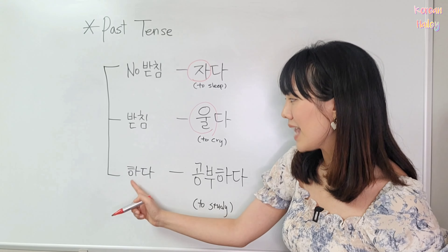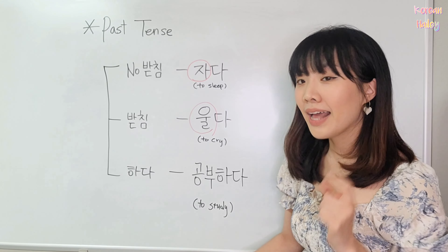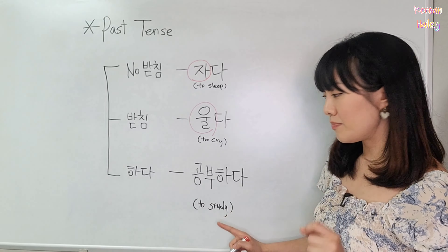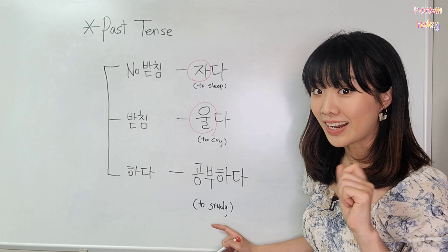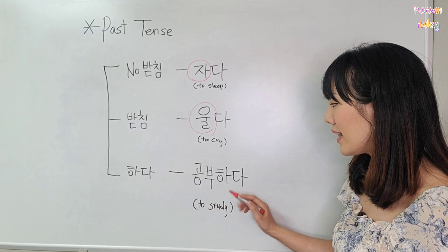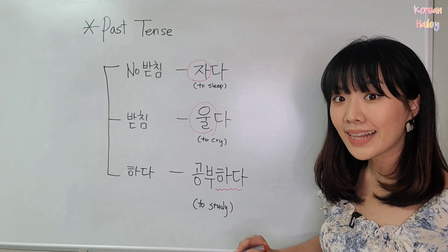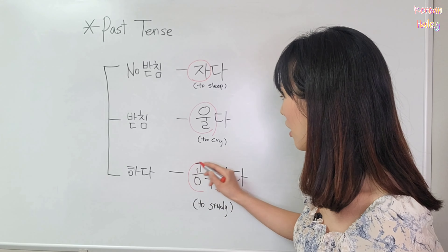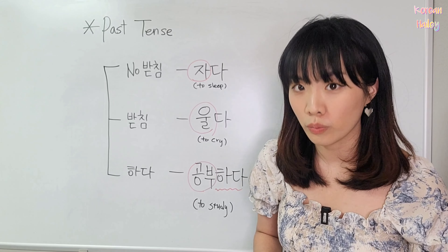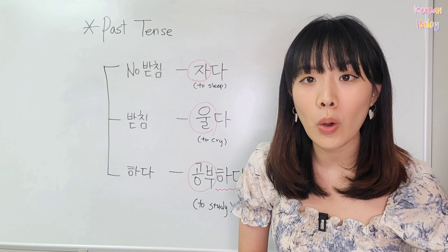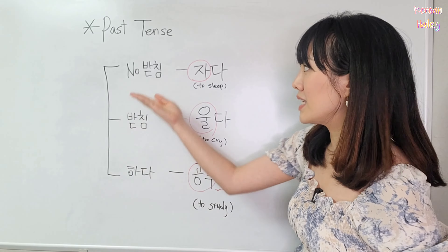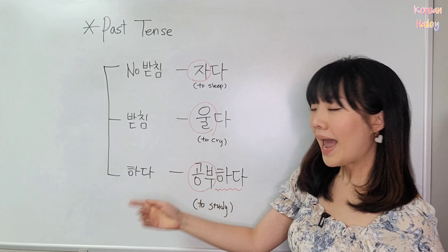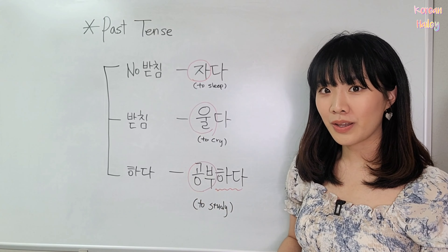The last verb type is the 하다 verb. Look at here — it's 공부하다, which means study. It ends with 하다. The 하다 verb's meaning is in 공부. So I wrote three types of verbs: 노받침, 받침 verb, and 하다 verb.